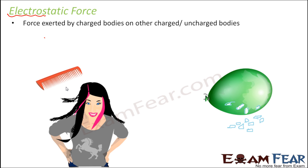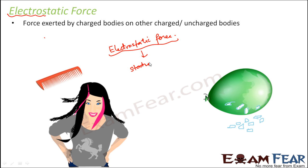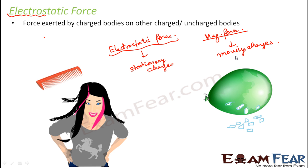In electrostatic force we also talk about attraction or repulsion, but it is not the same as magnetic force. In electrostatic force, the force is produced by stationary charges, that is static charges, whereas in the case of magnetic force it is produced by moving charges. Many people often confuse these two types of forces. Magnetic force involves magnets and magnetic materials, but in the case of electrostatic force, we talk about normal objects like combs or balloons, because even they can acquire some charge. When they acquire charge, they can exert a force, and that type of force is called electrostatic force.